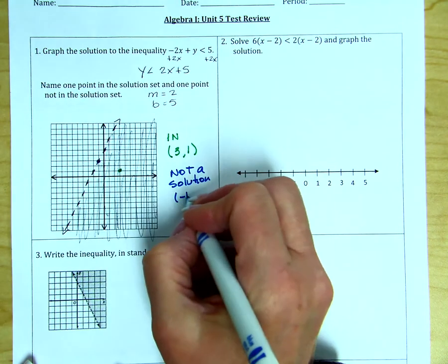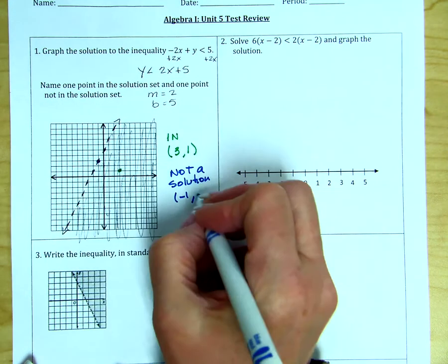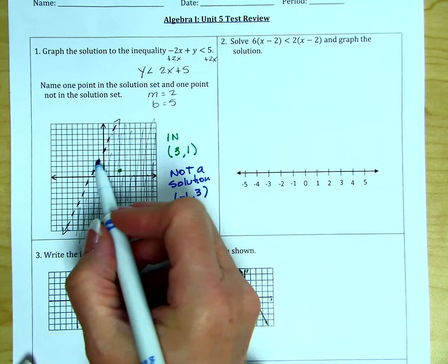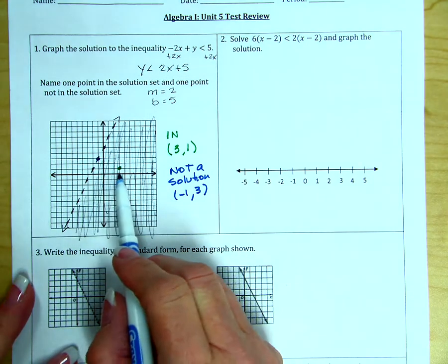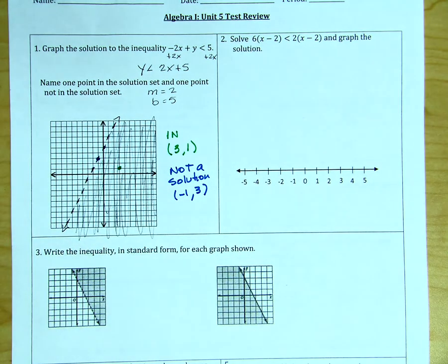Because it is strictly less than, we do not have anything on the line being part of the solution. So this point here, negative 1, 3, is not a solution. But the point positive 3, 1 is a solution because it's in the shaded area.